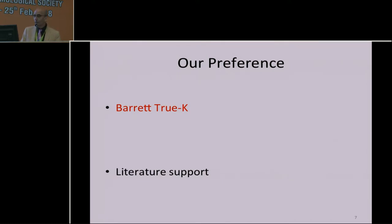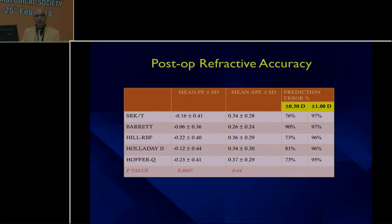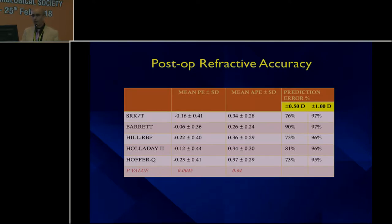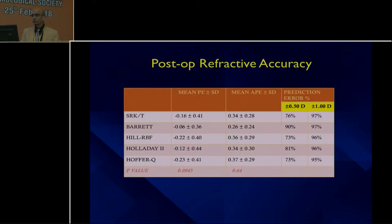Not only that — we did a study, which we are reporting at this meeting and also at some other international meetings, where we compared all these formulas with the Barrett-True-K formula. You will see that 90% of patients fell within 0.5 diopters or less, as you can see in the second column on the right.